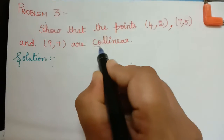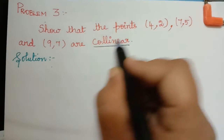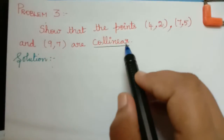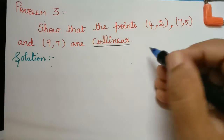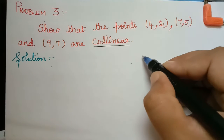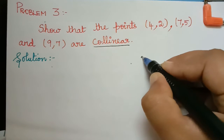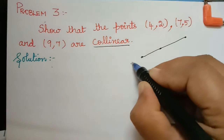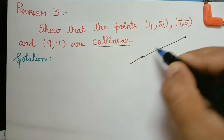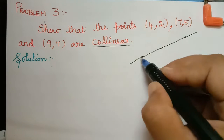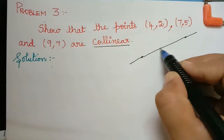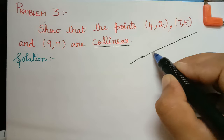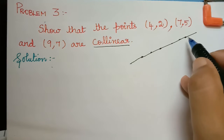So now, what is collinear? When are these three points said to be collinear? These three points are said to be collinear if they lie on the same straight line. So if we have a line segment, the points on the line segment are said to be collinear.